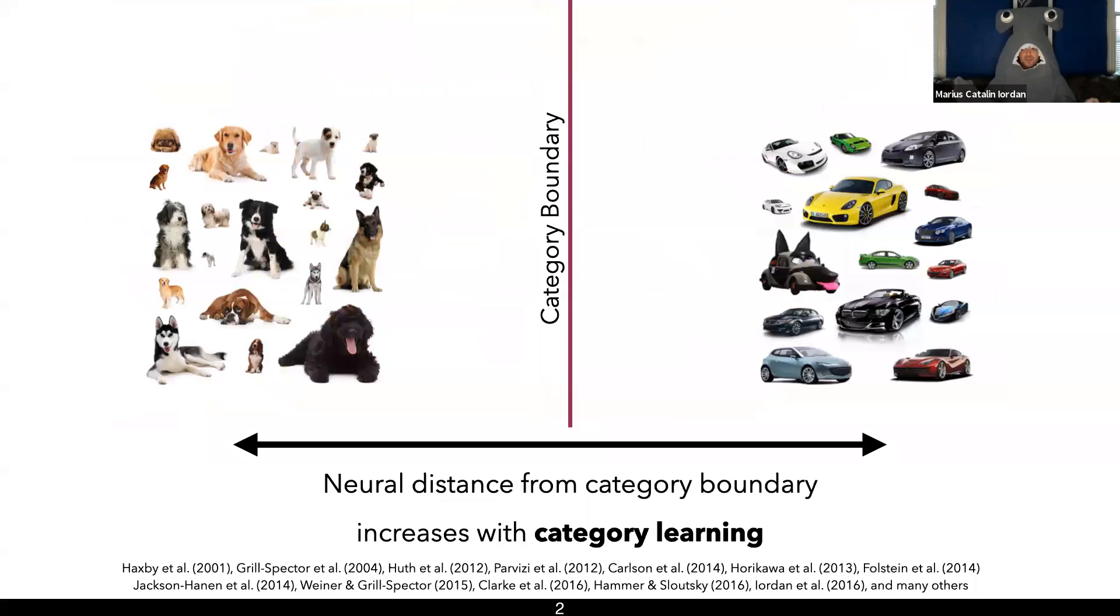We hypothesize that we could leverage this exact same process using neurofeedback to come up with a fundamentally new way for humans to acquire conceptual knowledge. That is, if we sculpt patterns of activity in the brain that mirror those that we expect to arise through learning of visual categories, we may lead to enhanced perception of these newly sculpted categories compared to similar not sculpted categories in the brain. So this is what we're going to try to do today.